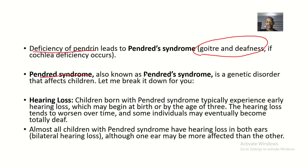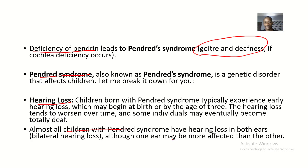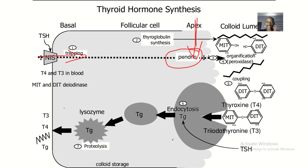Now let's break down hearing loss: children with Pendred Syndrome typically experience early hearing loss, which may begin at birth or by the age of three. The hearing loss tends to worsen over time, and some individuals may eventually become totally deaf. Almost all children with Pendred Syndrome have bilateral hearing loss, although one ear may be more affected than the other.